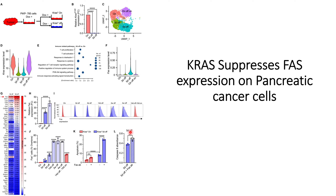Flow cytometry analysis also shows that with increased time that KRAS mutations remain off, there is an increase in FAS receptor signals. This signal goes back down when KRAS mutations are reactivated using doxycycline. The final figures show conditions of 14 days off and 10 days on, where the on conditions almost overlap with each other.